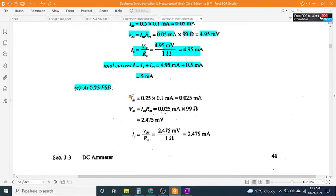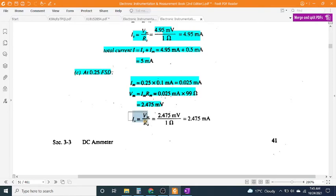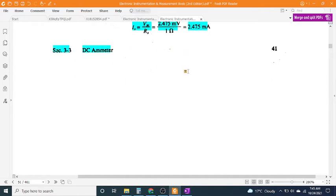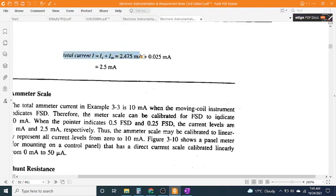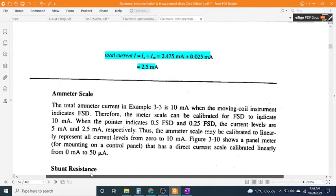Part C at 0.25 FSD: I_M = 0.25 × 0.1 mA = 0.025 mA. V_M = I_M × R_M = 0.025 mA × 99Ω = 2.475 mV. I_S = V_M / R_S = 2.475 mV / 1Ω = 2.475 mA. Total current I = I_M + I_S = 2.475 mA + 0.025 mA = 2.5 mA.